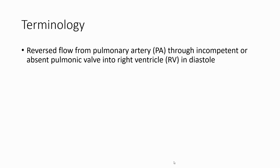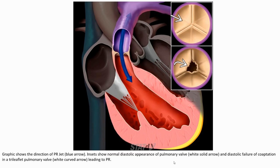There is reverse flow from pulmonary arteries through an incompetent or absent pulmonary valve into the right ventricle. This schema shows the direction of pulmonary regurgitation, indicated by the blue arrow, showing normal diastolic closure of the pulmonary valve and diastolic failure of coaptation in a trileaflet pulmonary valve leading to pulmonary regurgitation.